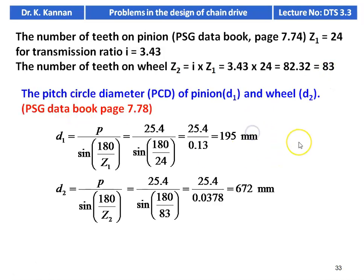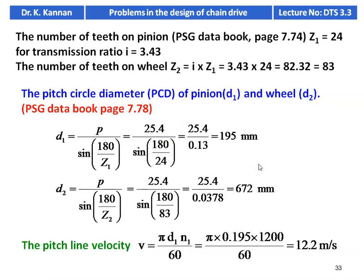Pitch circle diameter of the pinion: D1 = P / sin(180/Z1) = 25.4 / sin(180/24) = 25.4 / 0.13 = 195 mm. PCD of the wheel: D2 = P / sin(180/Z2) = 25.4 / sin(180/83) = 25.4 / 0.0378 = 672 mm. Pitch line velocity: V = π D1 N1 / 60 = π × 0.195 × 1200 / 60 = 12.2 m/s.